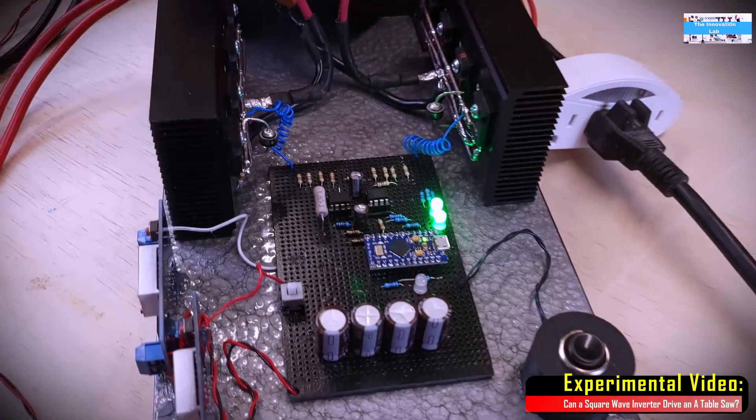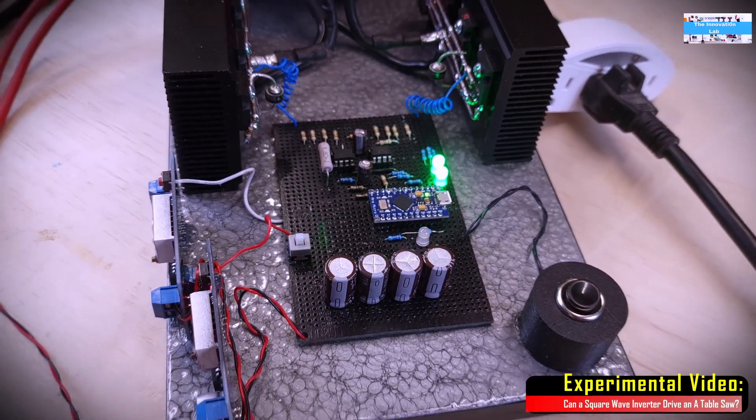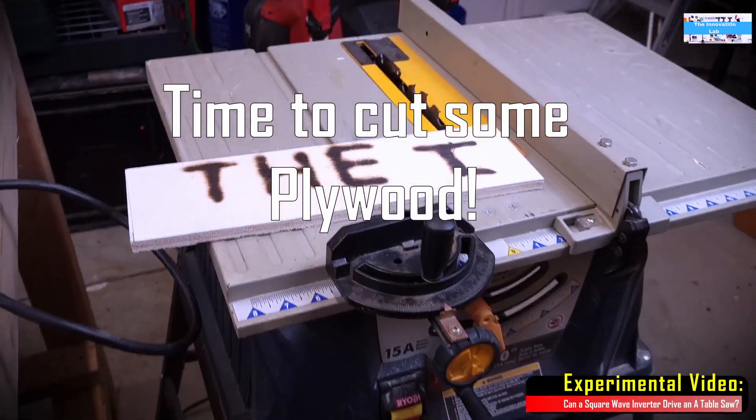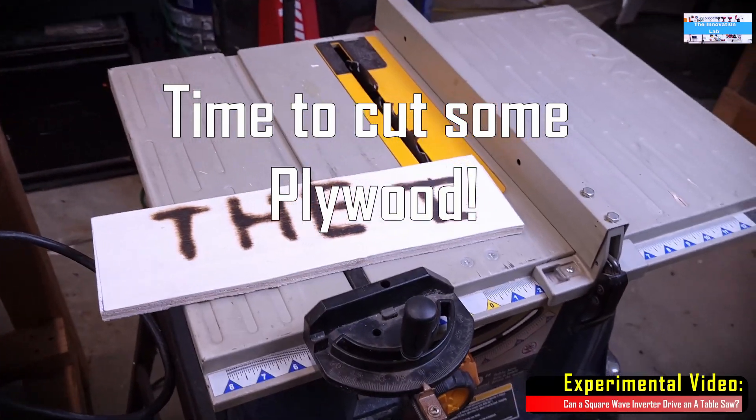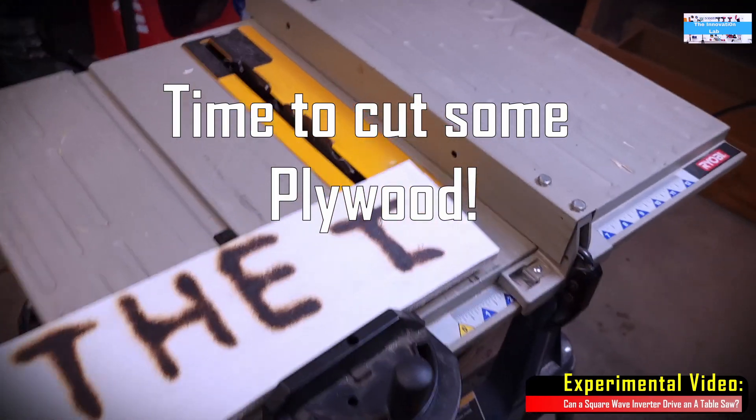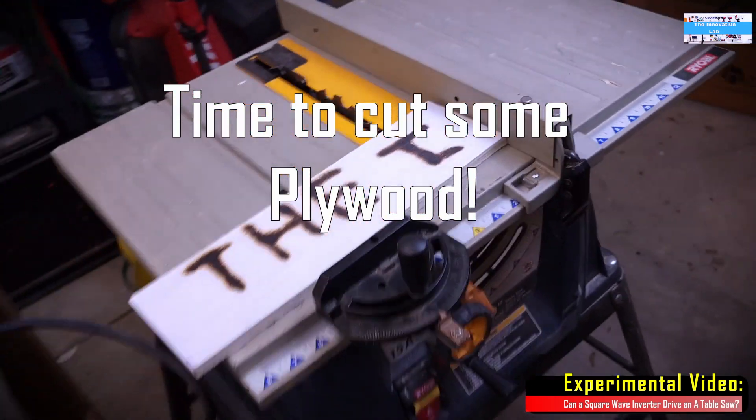All right let's get to the experiment. And for the experiment what we are going to do is use this square wave inverter to drive this table saw and just to test the power we're going to use it to try to cut this piece of plywood and to see how much of a drive that we can get out of this. All right so let's get to it.